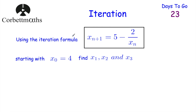So the first question says: use the iteration formula xn+1 = 5 - 2/xn. We've been told to start with x0 = 4 and to find x1, x2, and x3. Feel free to press pause now to work this out.